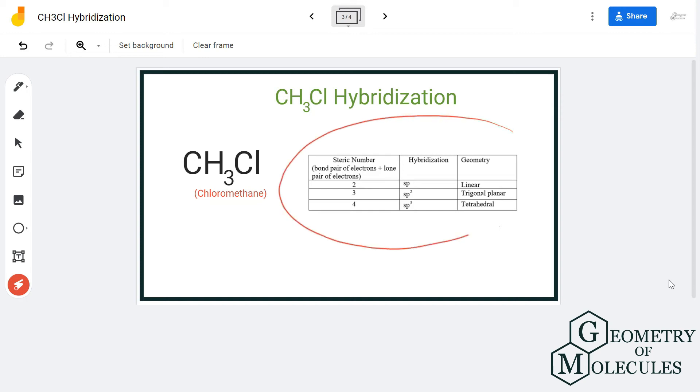You can also calculate the hybridization for hydrogen atom or chlorine atom, and you can do that and comment down below what is the hybridization of hydrogen in this molecule. I hope this table helps you to understand the hybridization concept better.